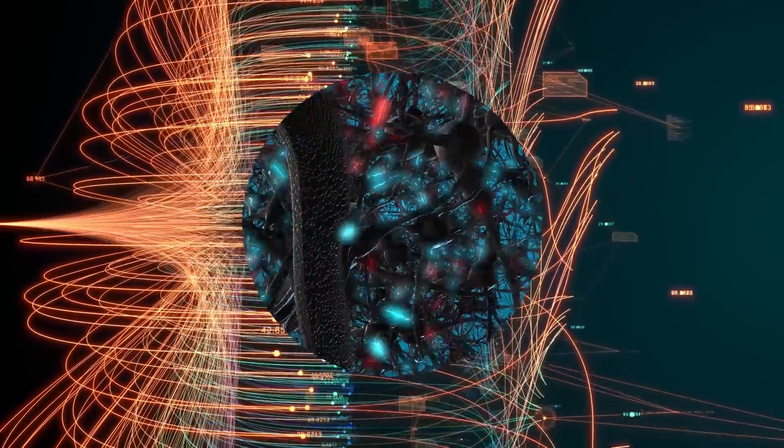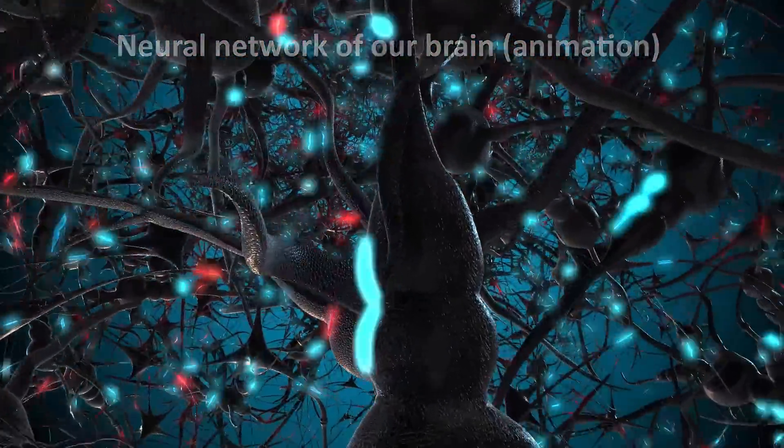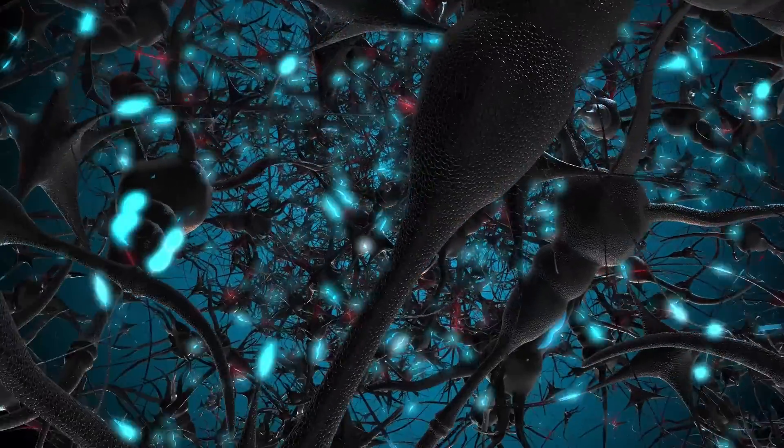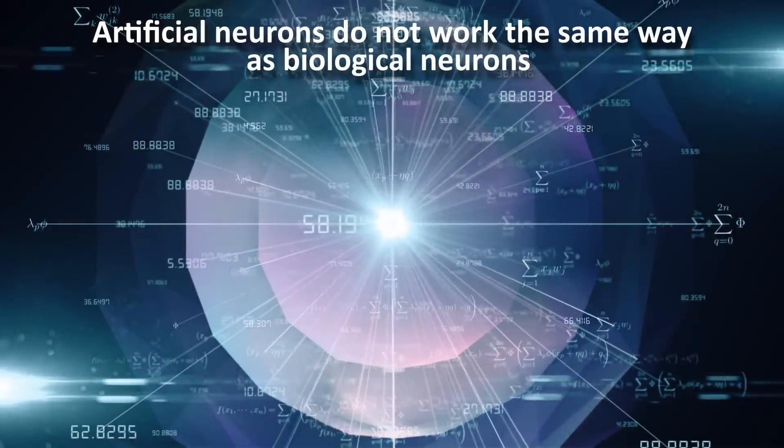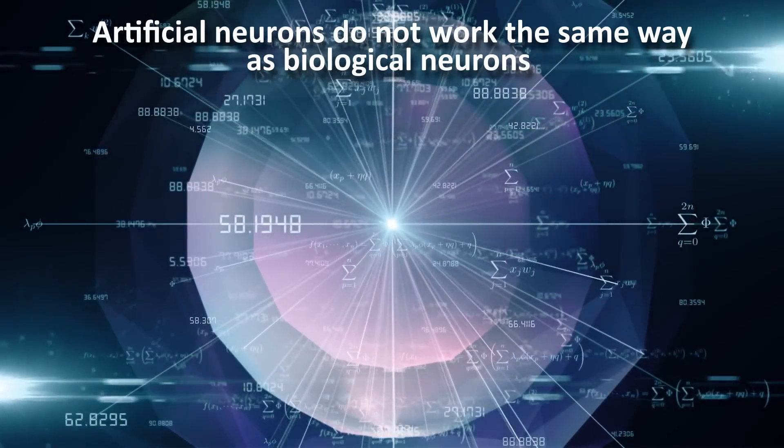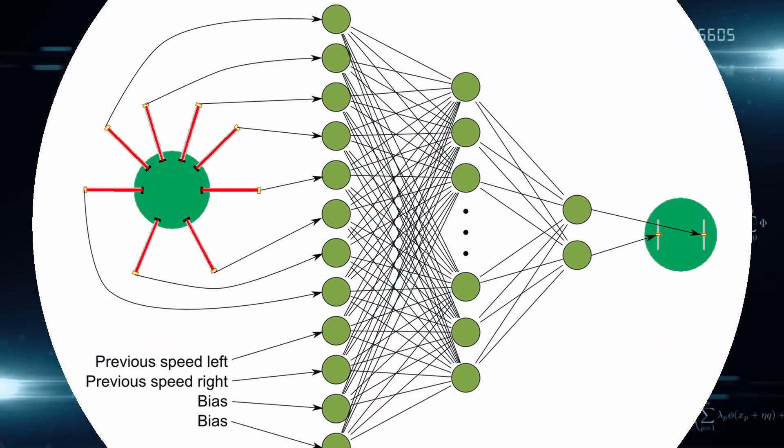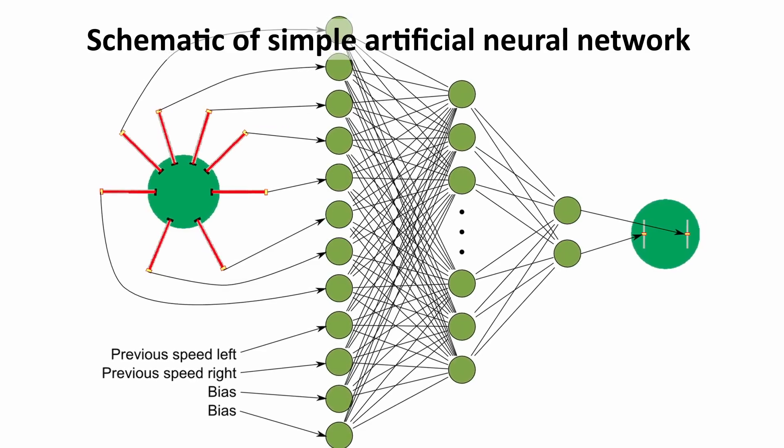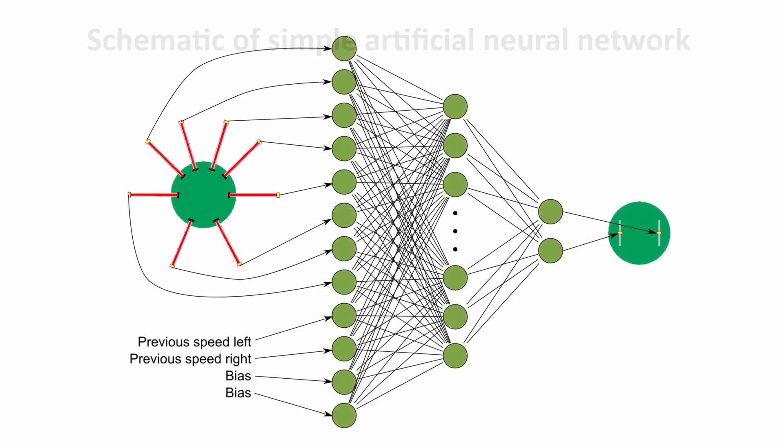But let me stress this from the start. Neurons in our brain are much more complex and advanced than neurons in an artificial neural network. Artificial neurons do not work the same way. The analogy with artificial neurons is limited because it applies to the way that they are networked, not to the way that they function. Like in the brain, we connect multiple neurons together and form a neural network, which we can train to perform a task.